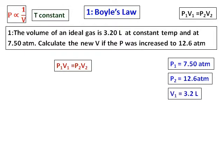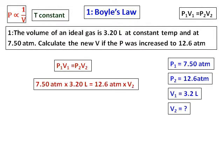V1 is given as 3.2 and we need to find V2. Substituting all the values into P1V1 = P2V2, we get V2. The pressure increased to 12.6 atmospheres and hence the volume decreased from 3.2 to 1.9 litres, confirming that pressure and volume are inversely related.